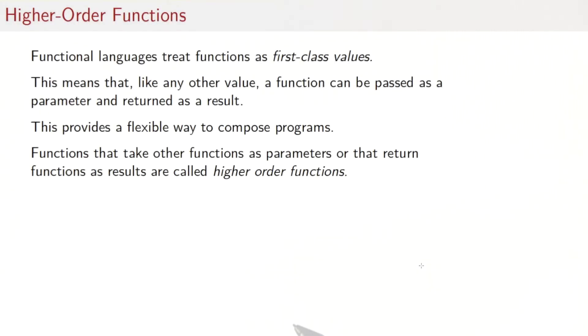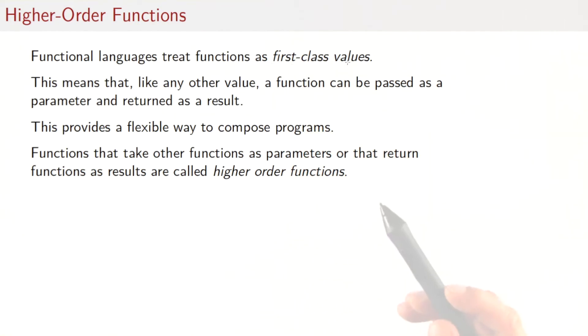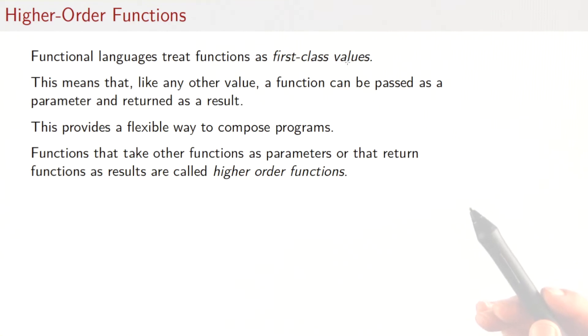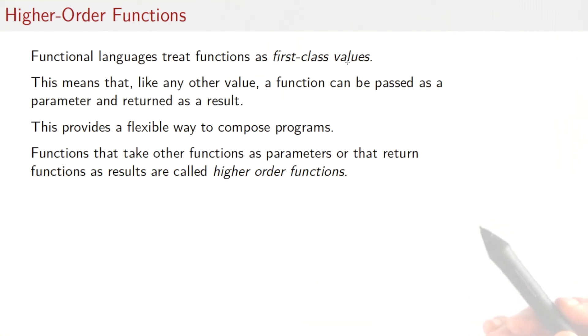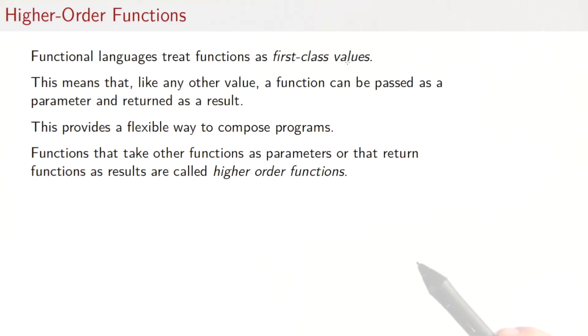In this session we are going to cover an important concept in functional programming. Higher order functions let you pass functions as arguments and return them as results. One thing particular about functional languages is that they treat functions as first class values. This means that, like any other value, a function can be passed as a parameter to another function or returned as a result. We'll see in this session that this provides a flexible way to compose programs.